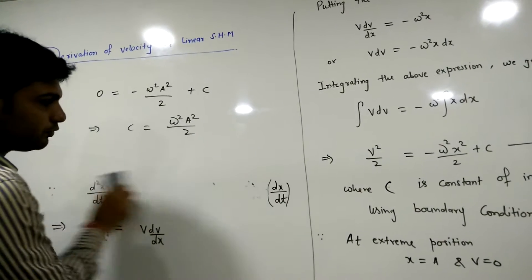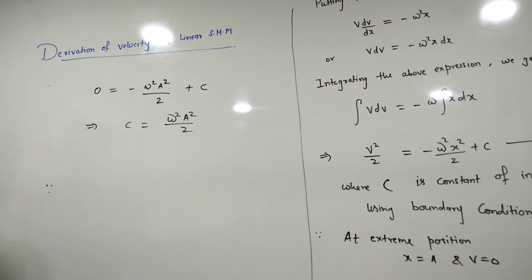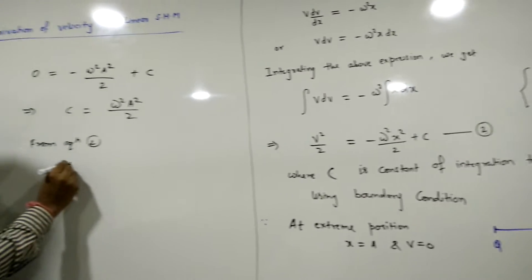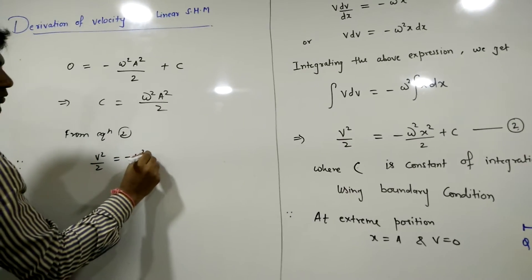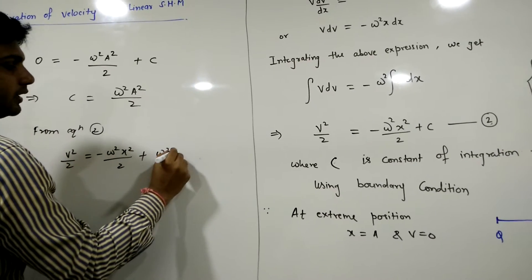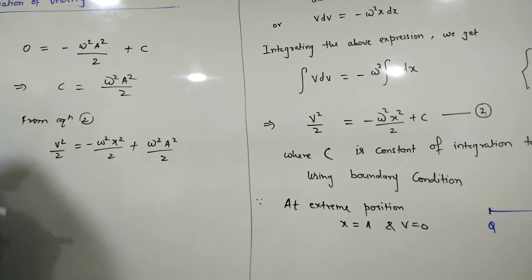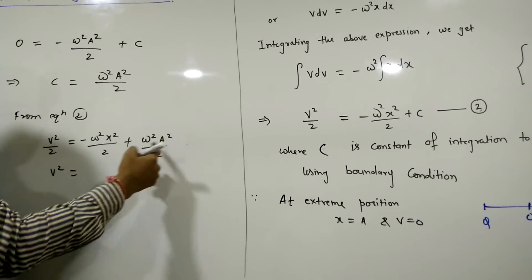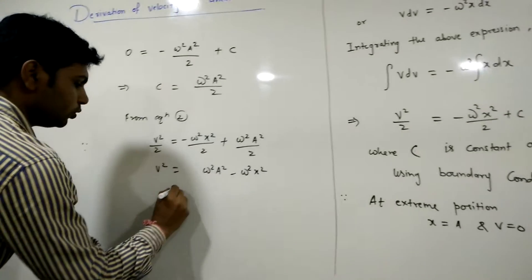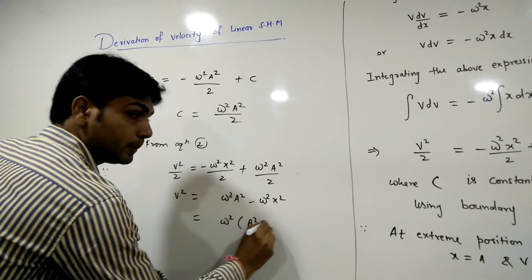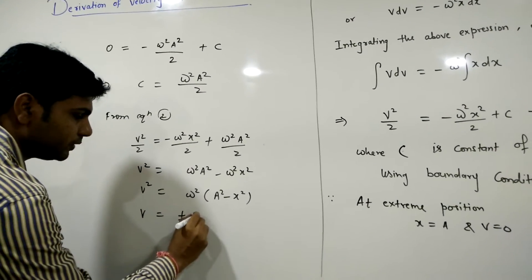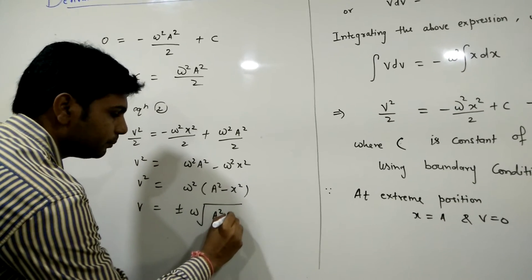Now putting the value of C back into the equation, we get v²/2 = -ω²x²/2 + ω²a²/2. The 2 cancels from both sides, so v² = ω²a² - ω²x² = ω²(a² - x²). Therefore, v = ±ω√(a² - x²).